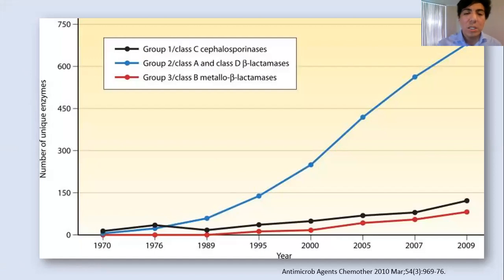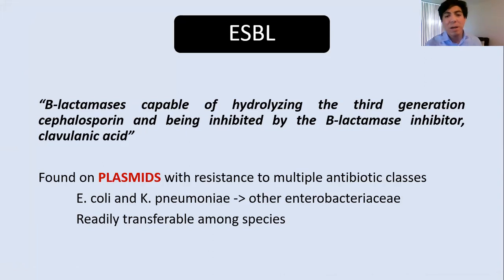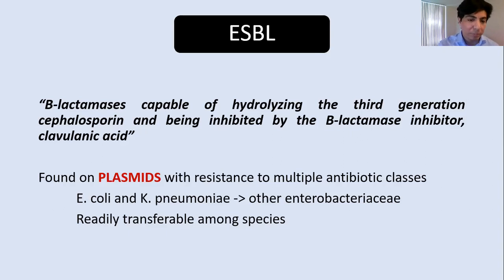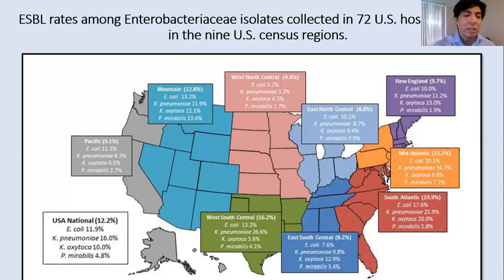In recent years, Group 2 beta-lactamases — specifically Classes A and D — have caused the most problems, with increasing frequency. Starting with ESBL: these are beta-lactamases capable of hydrolyzing third-generation cephalosporins and being inhibited by the beta-lactamase inhibitor clavulanic acid. They are found on plasmids carrying resistance to multiple antibiotic classes. E. coli and Klebsiella are the classic ESBL-harboring organisms, though other Enterobacteriaceae can also develop ESBL. In the U.S., about 12% of Enterobacteriaceae have ESBL-mediated resistance.